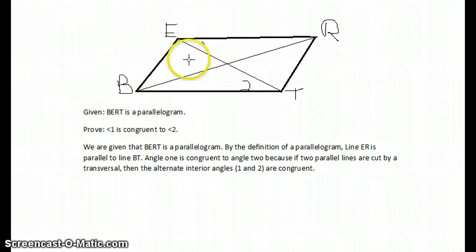We have to prove that angle 1 here is congruent to angle 2. We're given that BERT is a parallelogram. By the definition of a parallelogram, line ER is parallel to line BT.